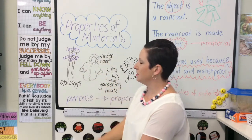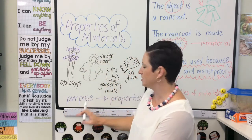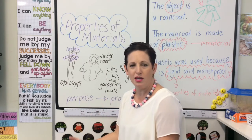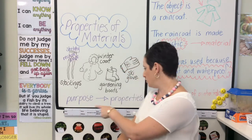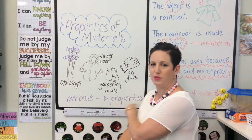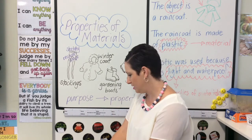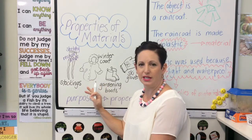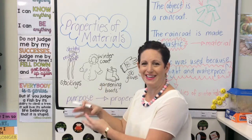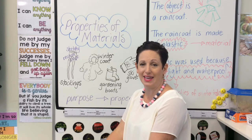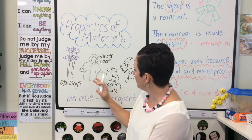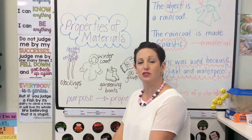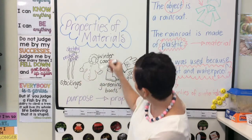A winter coat — the purpose of the winter coat is to keep you nice and warm. So we need to choose materials that have the properties that will be able to do that. A winter jacket needs to be a good thermal insulator, or a good heat insulator, which means to keep the heat in. A material like wool could possibly be used on the inside of the coat.